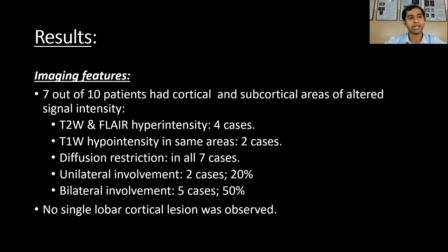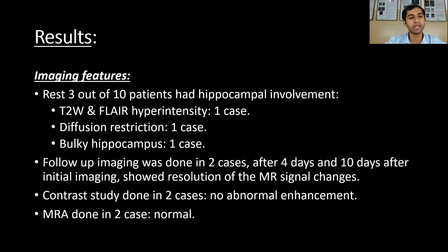Regarding imaging features, 7 out of 10 patients had cortical and subcortical areas of altered signal intensity, appearing as T2 and FLAIR hyperintensity in 4 cases, with 2 of those cases also showing T1 hypointensity. Diffusion restriction was seen in 7 cases, unilateral involvement in 20% of cases, and bilateral involvement in 50% of cases. No subcortical cortical lesion was observed in the study.